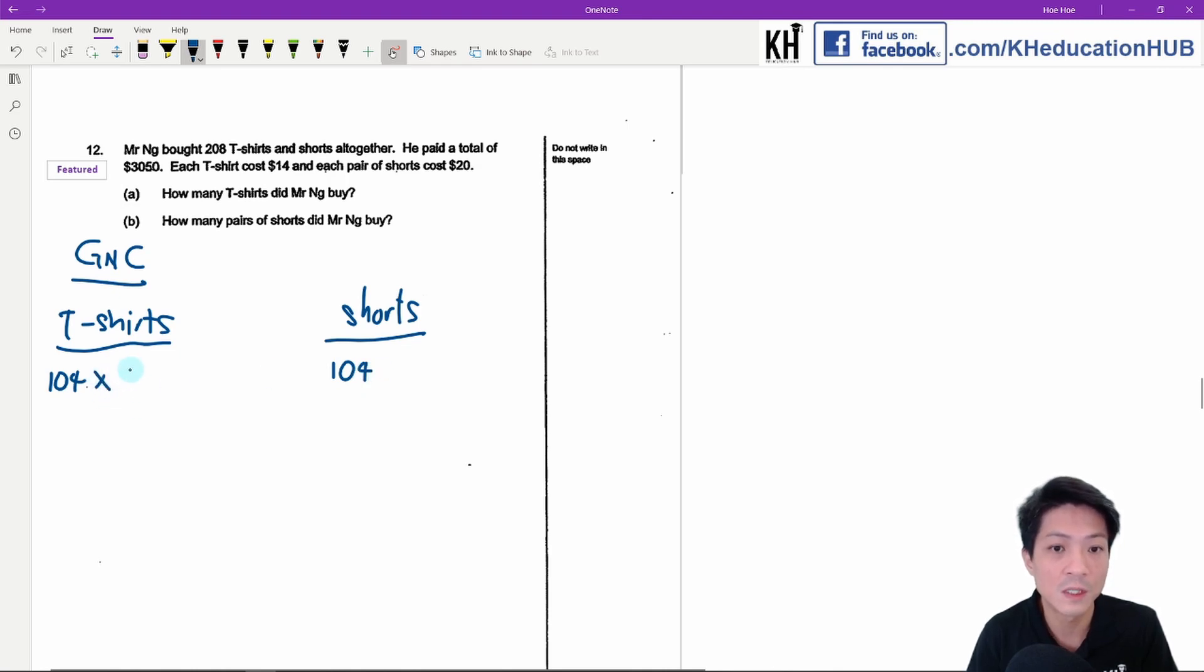Each t-shirt will cost $14, and each short will cost $20. What I need to do is I just need to find the total.